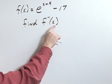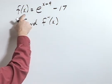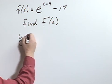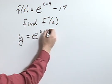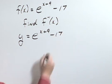Again, we want to find its inverse. We're going to start by letting f of x equal y. So y equals e to the x plus 9 minus 17.